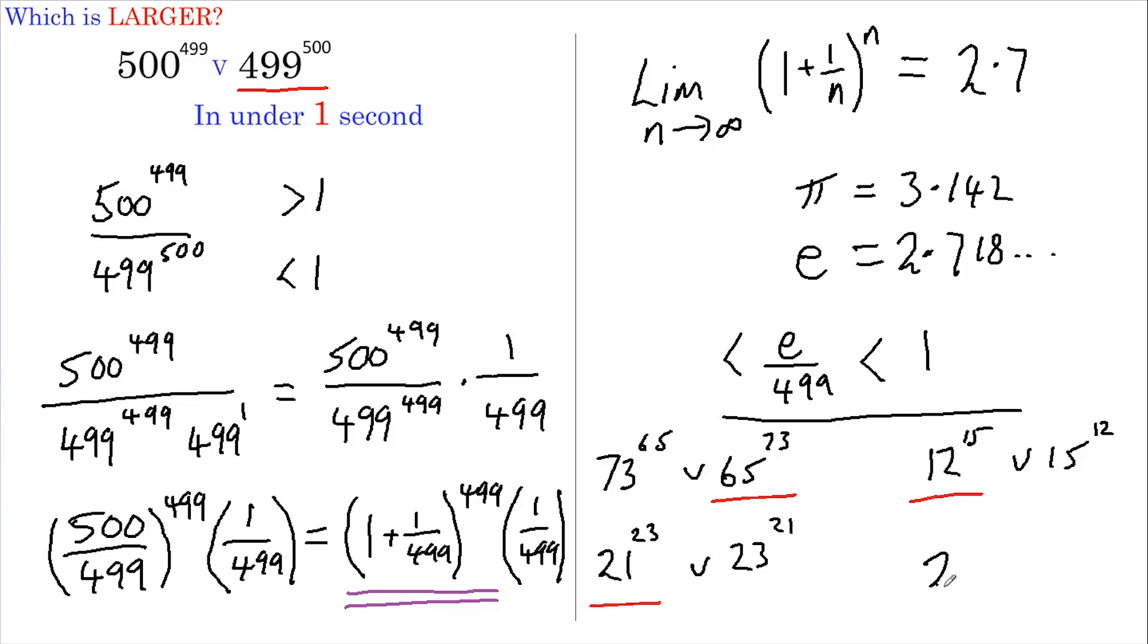And finally, 2 to the power of a half versus a half to the power of 2. This time both of the powers are less than e, therefore the smaller one is greater, which is this one.